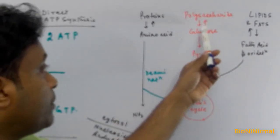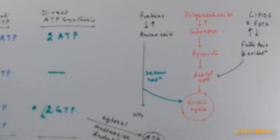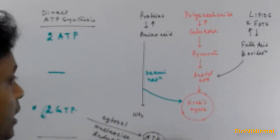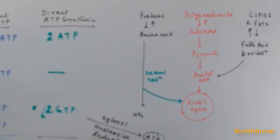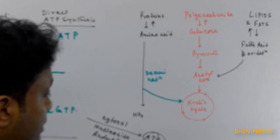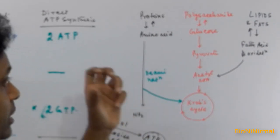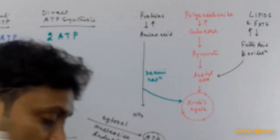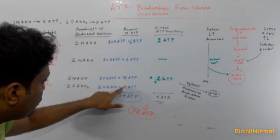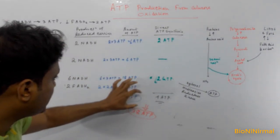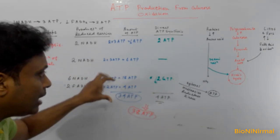All of these molecules — lipids, fats, and proteins — ultimately enter the Krebs cycle and produce a huge amount of ATP: 18 ATP, 4 ATP, and 2 GTP. This is why the Krebs cycle is called the heart of metabolism. Lipids undergo beta oxidation to form acetyl-CoA, proteins are broken into amino acids and undergo deamination producing ammonia and acetyl-CoA, and this acetyl-CoA enters the Krebs cycle.